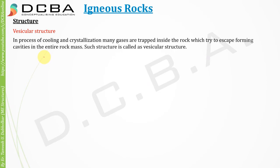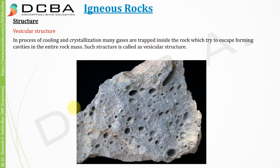Next is vesicular structure. In the process of cooling and crystallization, many gases are trapped inside the rock which try to escape, forming cavities in the entire rock mass. Such structure is called vesicular structure. When lava forms into a rock, trapped gases want to escape due to pressure differences. If the rock is soft enough, they escape and leave cavities inside the rock.